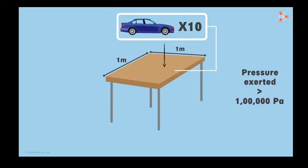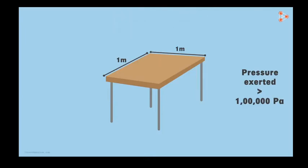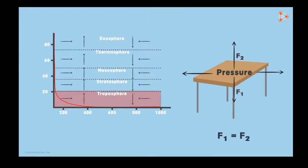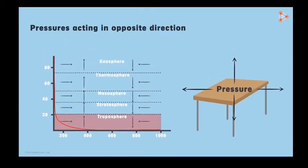This is equivalent to 10 cars being put on this table. Why doesn't the surface collapse under this huge pressure? Because pressure acts equally in all directions. If downward pressure is pushing the table surface with a great force, then the upward pressure is also pushing it upward with the same force. Both forces are balanced and the table does not collapse. Pressures acting in opposite directions cancel each other out.